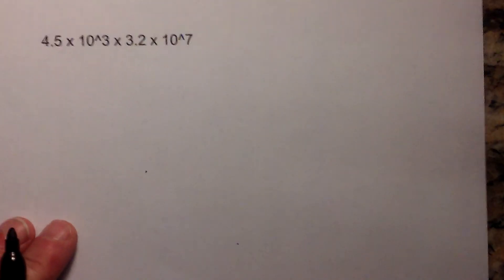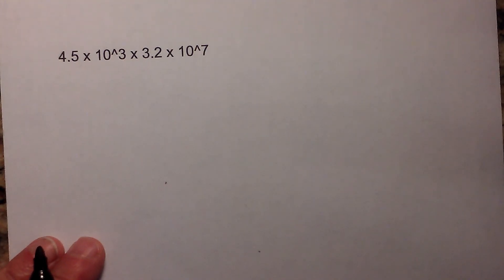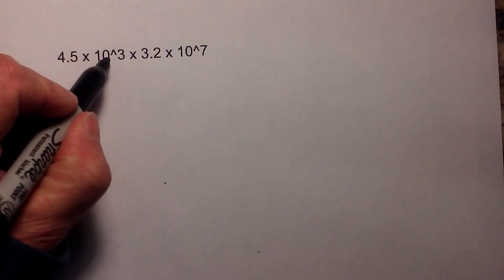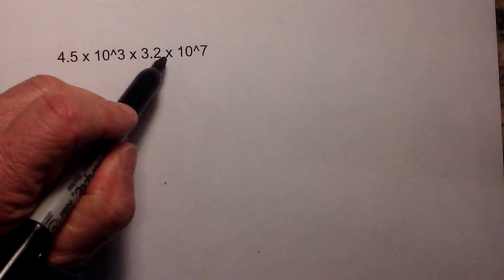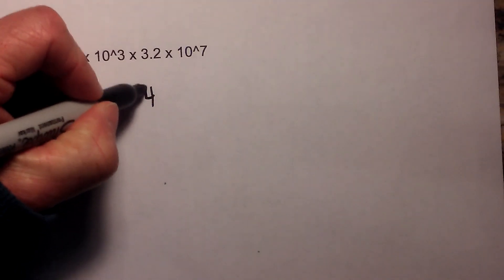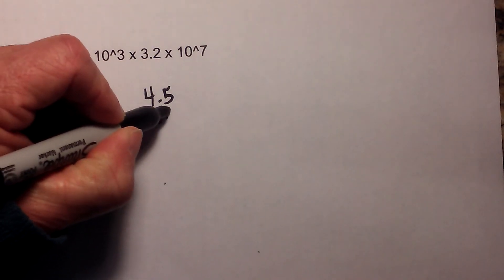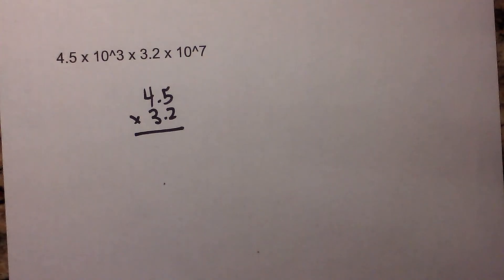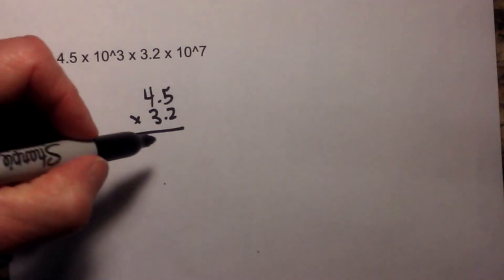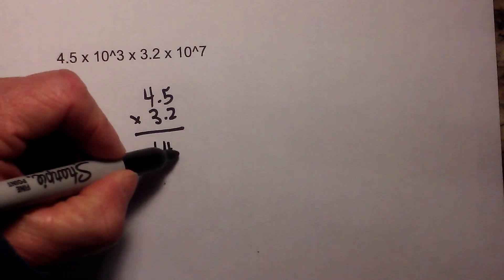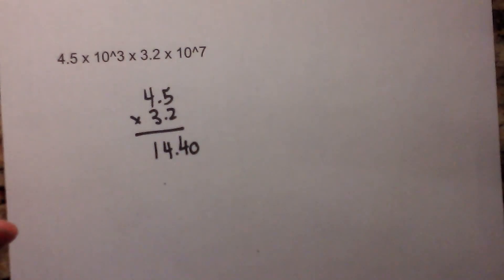Okay, let's work one more example. Next we have 4.5 times 10 to the third times 3.2 times 10 to the seventh. I will multiply the two coefficients, and when I multiply those two, it is 14.40.